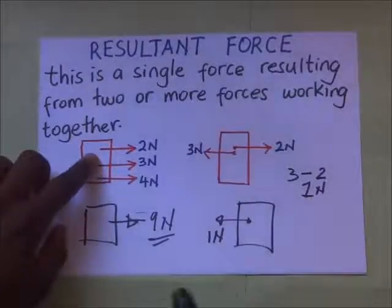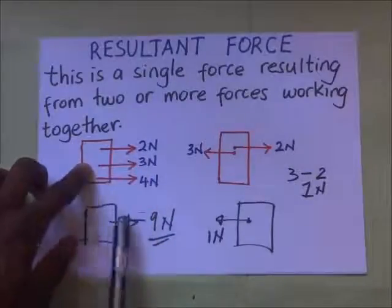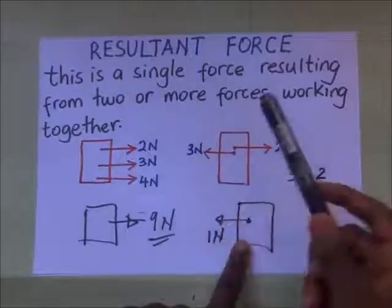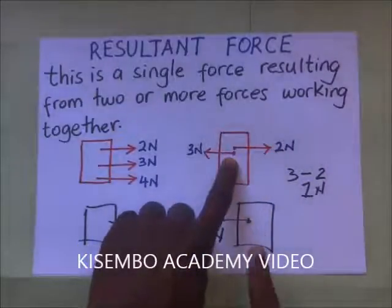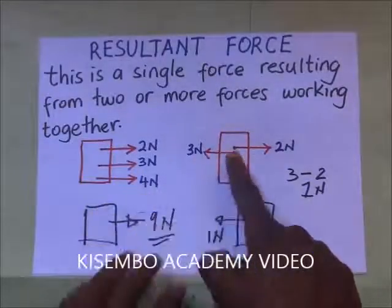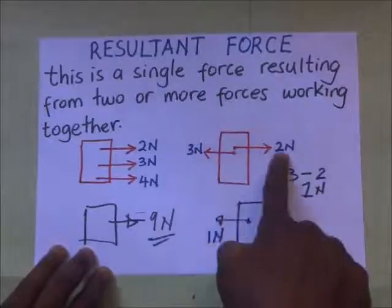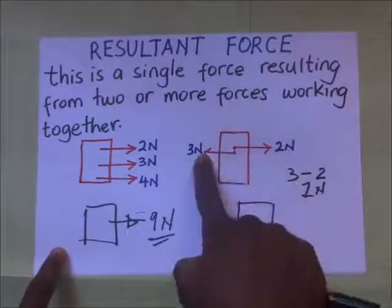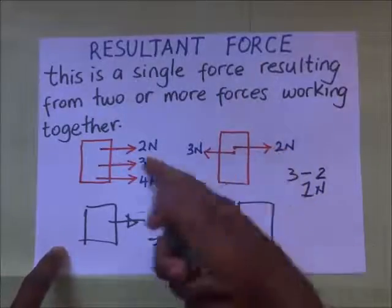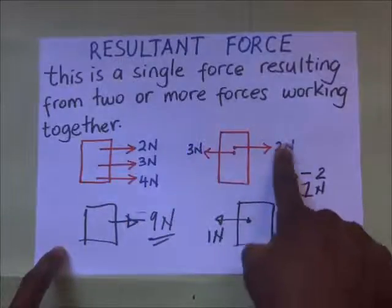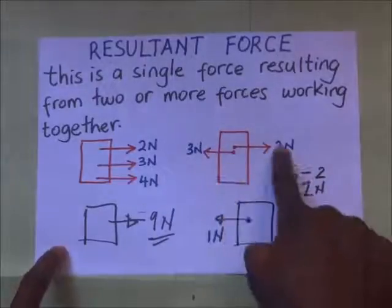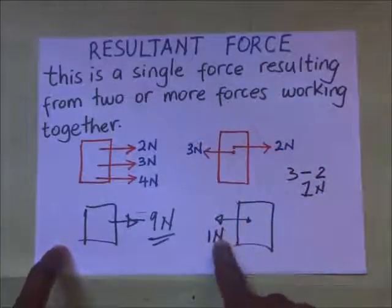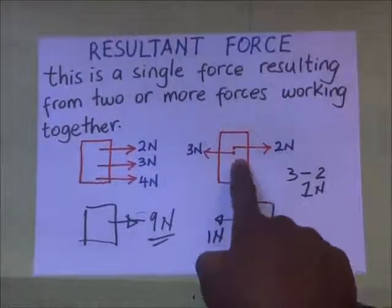This is how we get resultant forces for bodies with forces acting parallel to each other — either in the same direction, giving simply 9 newtons, or on the same plane in opposite directions. If two people are playing tug of war, one pulling with 3 newtons and the other with 2 newtons, the 3 newton force is bigger. To overpower, the winning side must first overcome the opposing force: 3 minus 2 equals 1 newton. So the block is pulled in that direction by a resultant force of 1 newton.